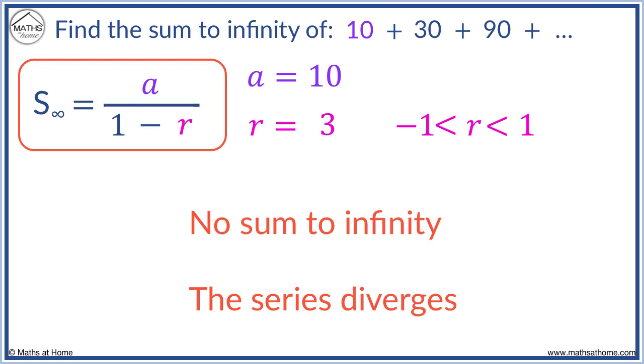We only have a sum to infinity if the terms get smaller. Here is a question written in sigma notation. To work this out, we want to generate the sequence first. We put n equals 1 into the expression to find the first term. 28 times a half to the power of 1 equals 14.